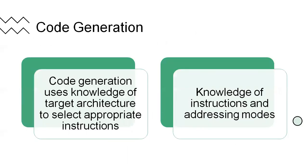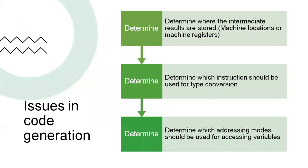Now let us move to code generation. Code generation depends first on knowledge of instructions and addressing modes. It also uses knowledge of the target architecture to select appropriate instructions. The machine may be an updated or previous version — depending on that, which addressing modes and instructions are supported determines how code generation is performed.